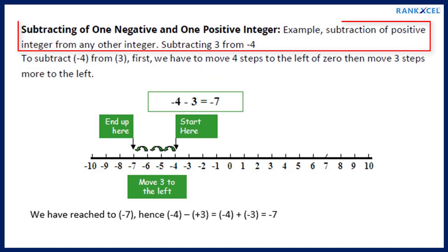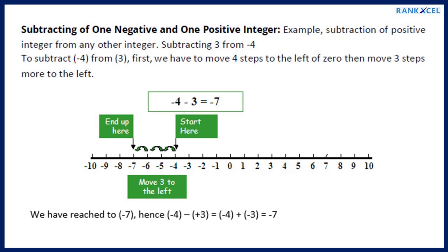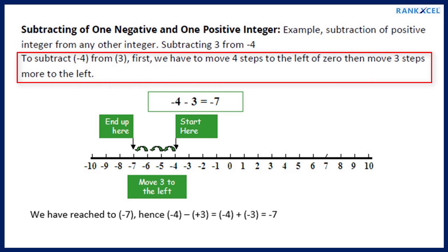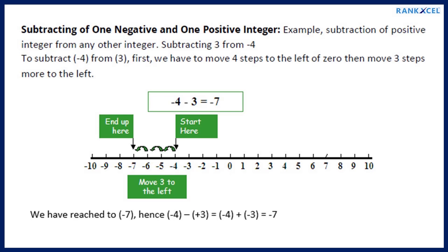Subtracting one negative and one positive integer on a number line. Example: Subtracting 3 from minus 4. First we move 4 steps to the left of 0, then move 3 steps more to the left. We have reached minus 7. Hence minus 4 minus plus 3 equals minus 4 plus minus 3 equals minus 7.